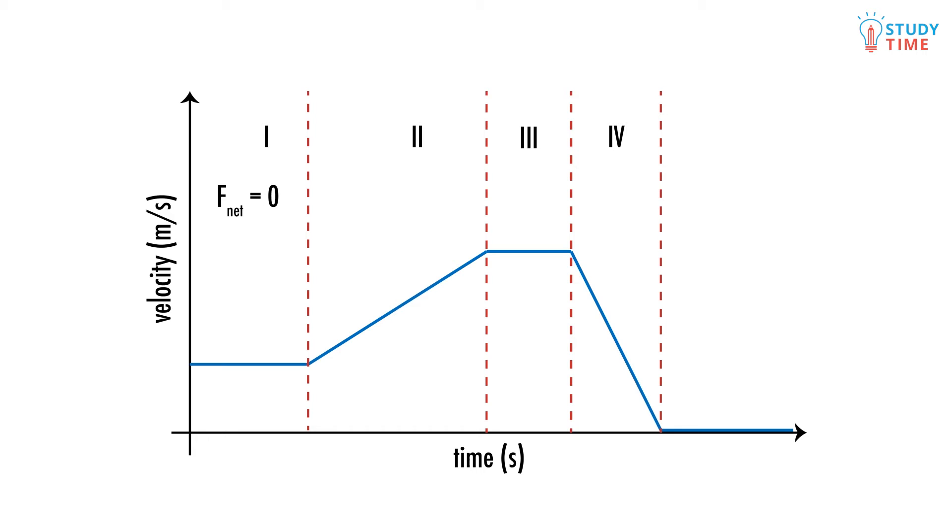In stage 2, Holly is accelerating, so the forces must be unbalanced. F net doesn't equal zero. She is able to accelerate because the force of gravity accelerating her down the slope is greater than the friction of the snow trying to stop her.